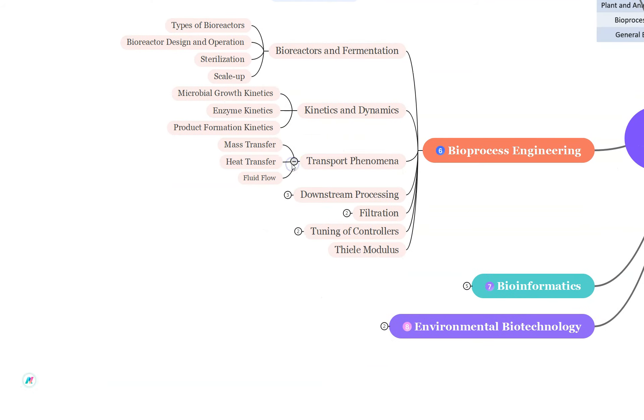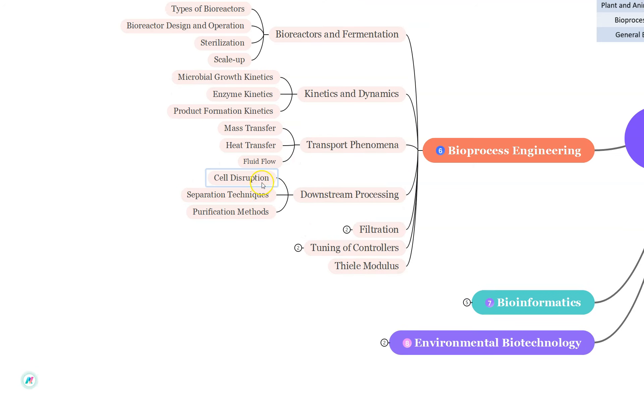From the transport phenomena, study about mass transfer which is oxygen transfer in bioreactors and mass transfer coefficient, oxygen uptake rate. From heat transfer, study the different heat transfer processes in bioprocess and design of the heat exchangers. For fluid flow, study the flow regimes. Specifically don't forget Reynolds number and also the designing of the piping and the pump.